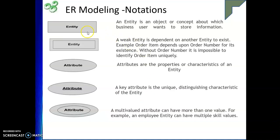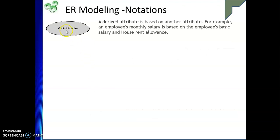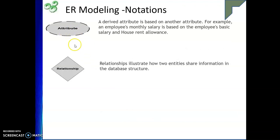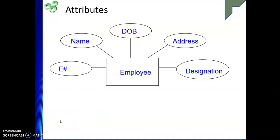Let me summarize the notations. Entity is represented by a rectangle. Weak entity uses a double rectangle. Attribute is represented as an oval shape. For a key attribute, you underline the name. A multi-valued attribute uses a double oval shape. A derived attribute uses a dotted oval. For a relationship, we use a diamond shape, and if the relationship involves a weak entity, we use a double rhombus symbol.